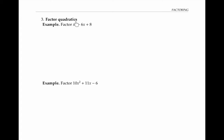Next we'll do some factoring of quadratics. A quadratic is an expression with a squared term, just a term with x in it, and a constant term with no x's in it. I'd like to factor this expression as a product of x plus or minus some number times x plus or minus some other number. The key idea is that those two numbers would have to multiply to give me my constant term of eight, and they would have to add to give me negative six.